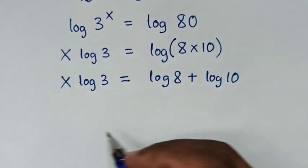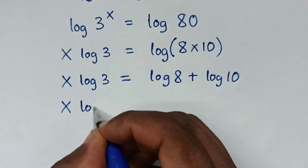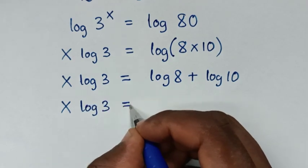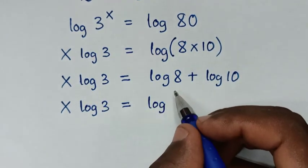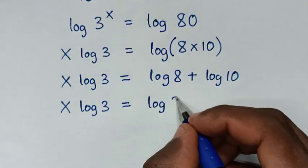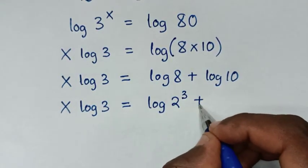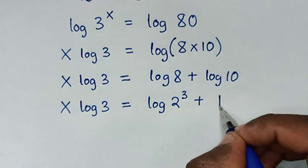Then in the next step, it will be x log of 3 is equal to log of 8. 8 is same as 2 power of 3, then plus log of 10 is same as 1.